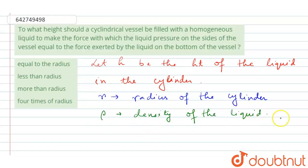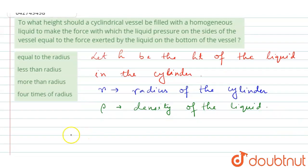So from here we can write, therefore, weight of the liquid will be equals to π r² h ρ g. This one we can write, so name this equation as equation 1.